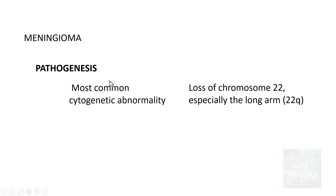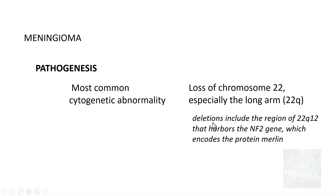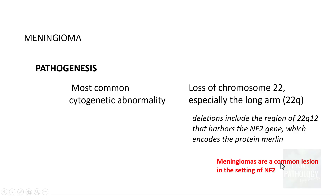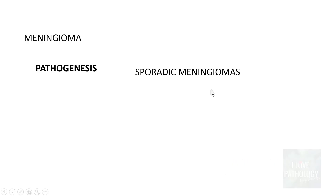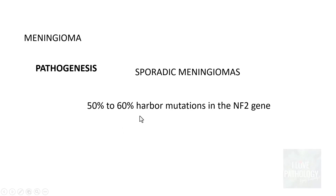The most common cytogenetic abnormality found in Meningiomas is the loss of chromosome 22, particularly the long arm of chromosome 22, where deletions include the region that harbors the neurofibromatosis 2 gene. This gene encodes the protein Merlin, which is why Meningiomas are common in the setting of neurofibromatosis 2. Even in sporadic Meningiomas, 50 to 60% of them harbor mutations in the neurofibromatosis 2 gene.